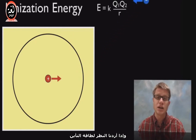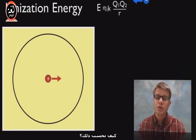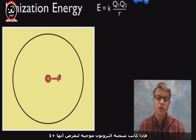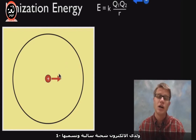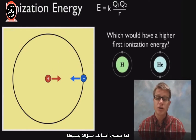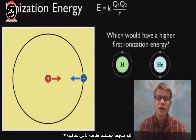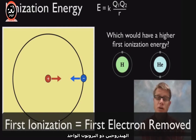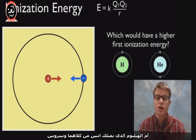If we look at ionization energy — the amount of energy it takes to pull that electron away — we multiply the two charges. The proton has a positive charge, let's call that plus one, and the electron has a negative charge, let's call that negative one. The only other thing we really need is the radius, the distance between the two. Which do you think would have a higher ionization energy: hydrogen with one proton and one electron, or helium with two of each?